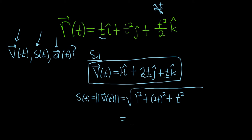This equals the square root of 1 plus 4t squared plus t squared. So this is the square root of 1 plus 5t squared. That's the speed. The speed as a function of time equals the square root of 1 plus 5t squared.